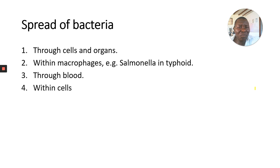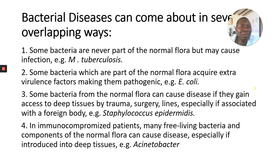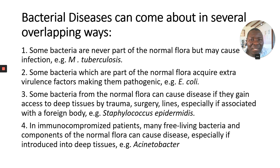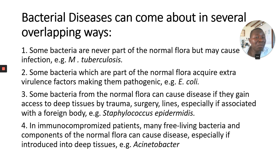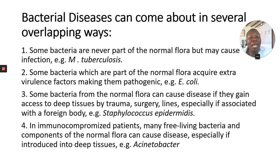Bacteria spread through cells and organs — if they affect one area, they spread from cell to tissue to organs, and even within the macrophages themselves, some bacteria spread through the blood and within the cell. Bacterial diseases can come about in several overlapping ways: some bacteria are never part of the normal flora but may cause infection, e.g., Mycobacterium tuberculosis. Some bacteria which are part of the normal flora acquire virulence factors making them pathogenic, e.g., Escherichia coli. And some bacteria from the normal flora can cause disease if they gain access to deep tissue by trauma, surgery, or lines — especially Staphylococcus epidermidis in immunocompromised patients.